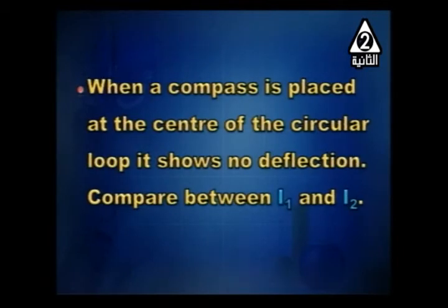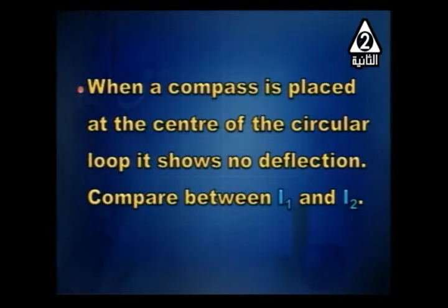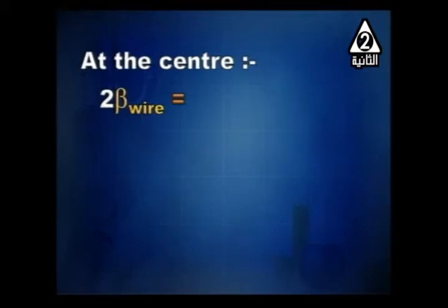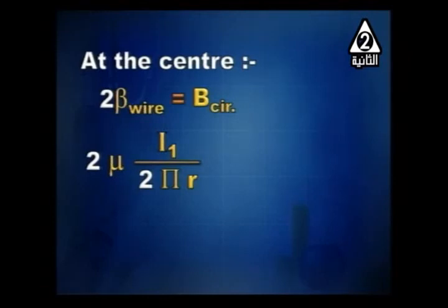When a compass is placed at the center of the circular loop, it shows no deflection. We want to compare I1 to I2. No deflection means the fields cancel out. We have three fields: the fields of the two straight wires (which have the same direction) must cancel the field of the loop. At the center, the two fields of the two straight wires are equal and opposite to the field of the circular loop: 2 × (μ·I1 / 2π·r) = μ·I2 / 2r.